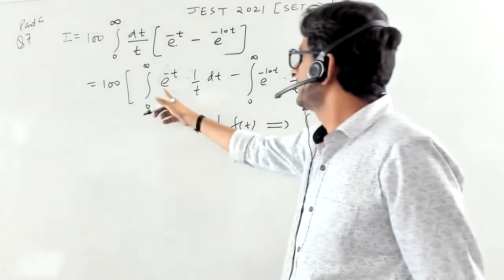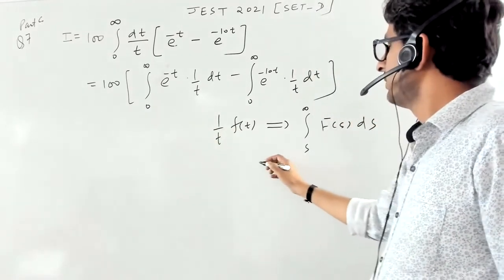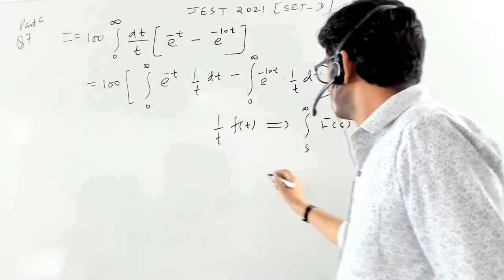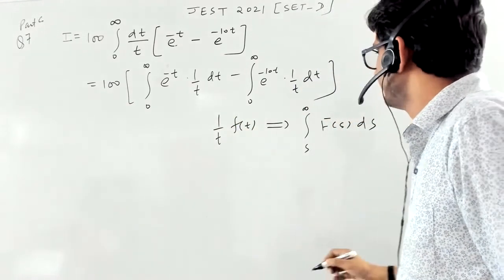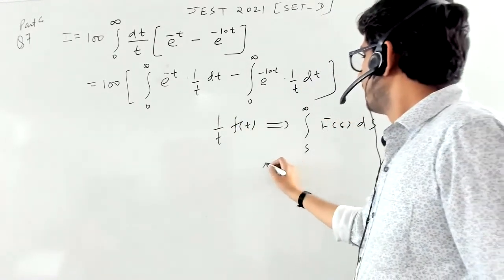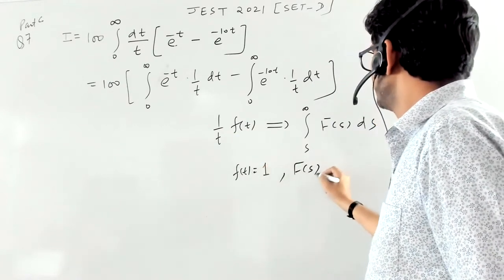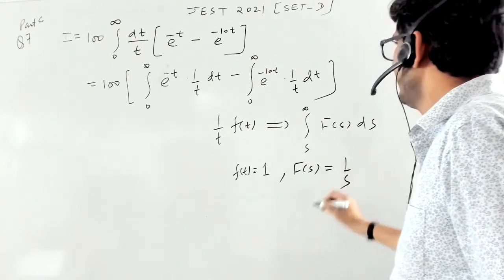So if you see this case, what is the value of ft? 1 by t is there, but what is the value of ft? Ft is one. So what will be the value of fs? It will become one by s.